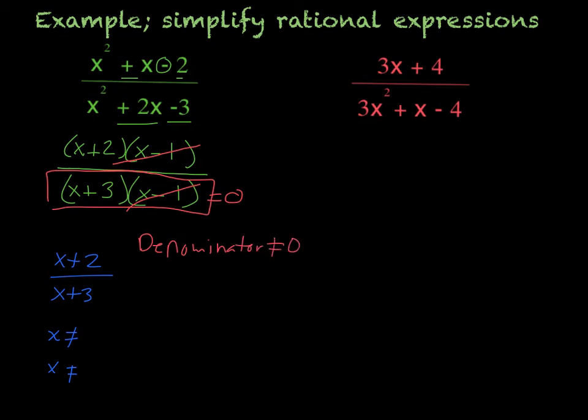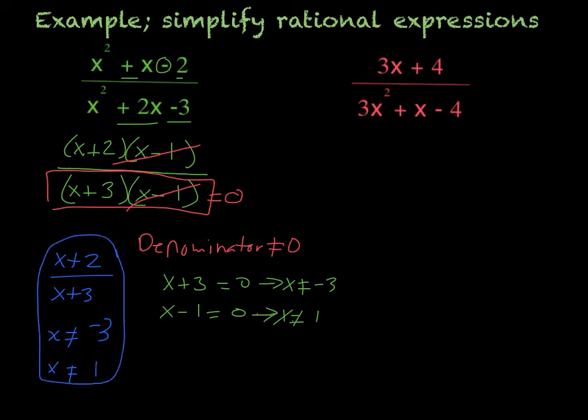Since the denominator cannot equal 0, then we just have to set those individually equal to 0. So x plus 3 equals 0 and x minus 1 equals 0. So that would mean that x cannot equal a negative 3 and x cannot equal a positive 1. So those would be our two x's that x cannot equal. So that would be your entire answer. You have to have both parts.